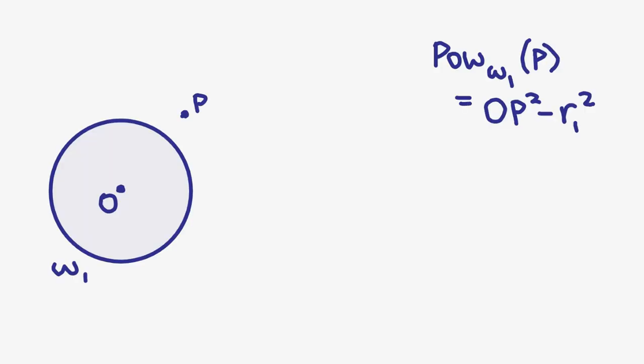Recall that the power of a point P is defined as the following, where O is the center of circle omega 1, and R1 is the radius of the circle. We can rewrite this in a coordinate form if we give P coordinates and point O coordinates. Then we have the following.